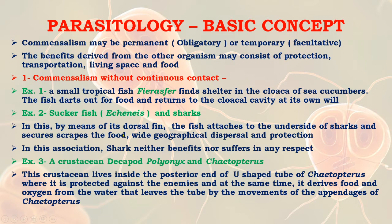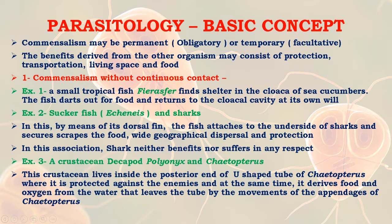By means of its dorsal fin, the sucker fish attaches to the underside of the shark and secures scraps of food, providing geographical dispersal and protection. In this association, the shark neither benefits nor suffers in any respect. Another example is the crustacean decapod Polyonyx and Chaetopterus — Polyonyx lives inside the posterior end of the U-shaped tube of Chaetopterus, protected against enemies, and derives food and oxygen from water moved by the appendages of Chaetopterus.